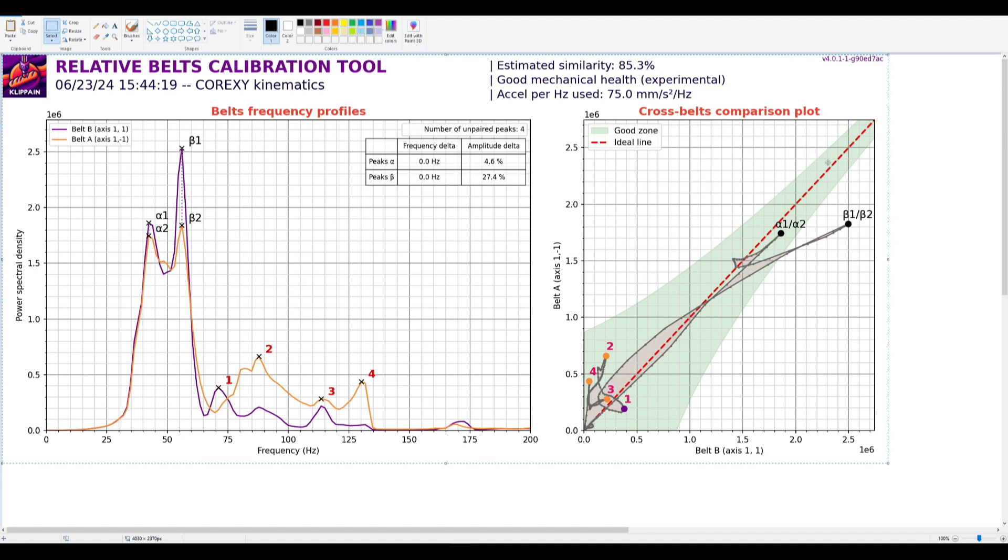So this is the cross-belt comparison aspect. And what we're seeing here, let me get, let's choose, we'll go with red. But we see here that the frequencies are the same, but the amplitudes obviously are different, right? They're going from here to here.